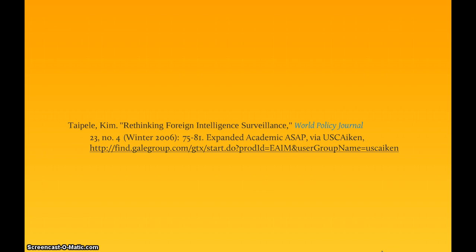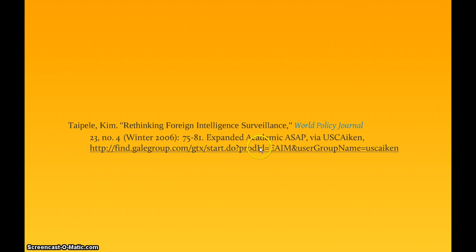Here we have a citation for an article that we received from a database. The parts of this citation include the author name, the name of the article, the journal title, the volume and issue number of the journal, the publication date, the pages in which the article appears, the database that the article was retrieved from, and a URL to the database.